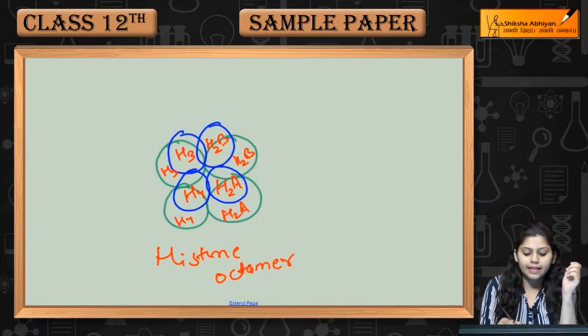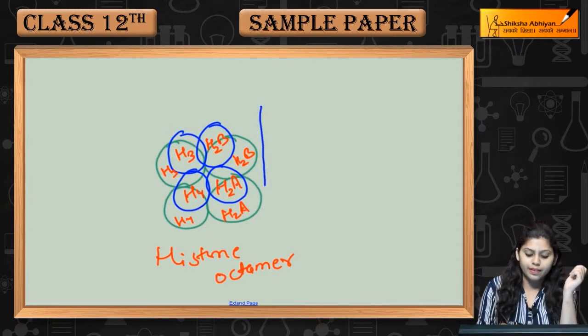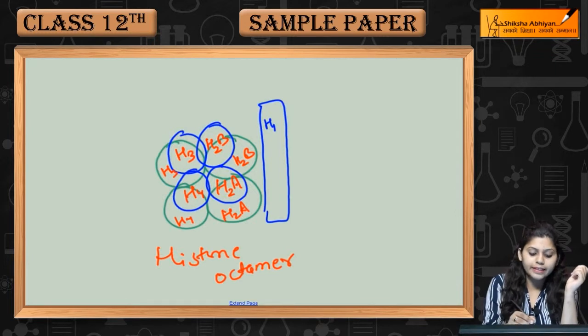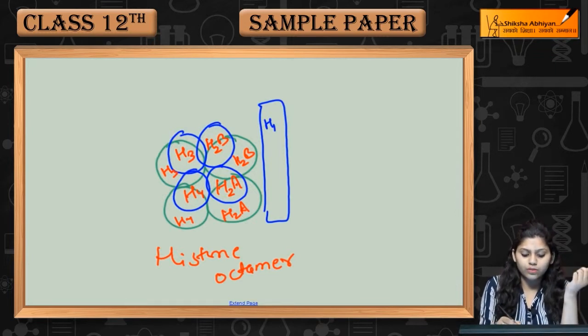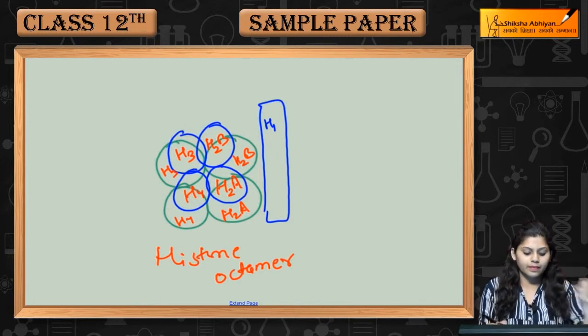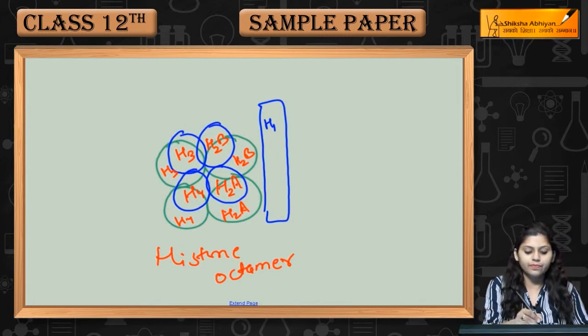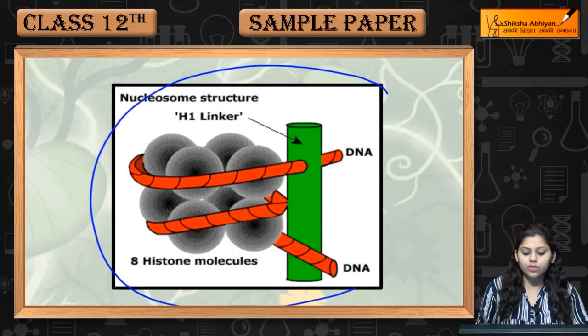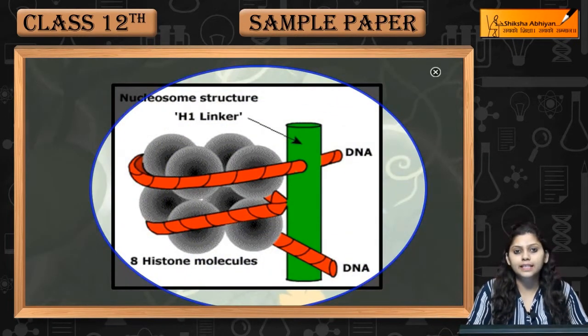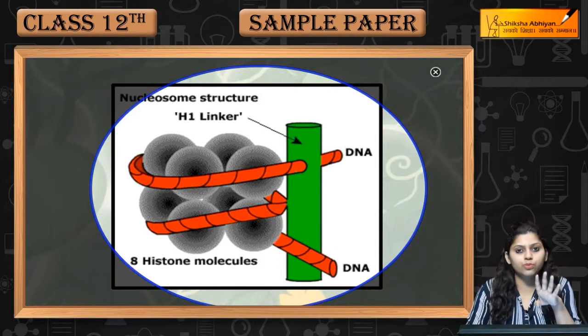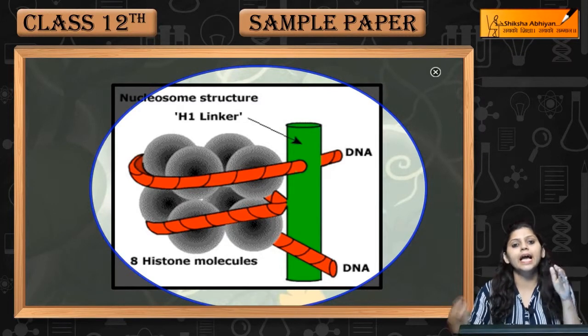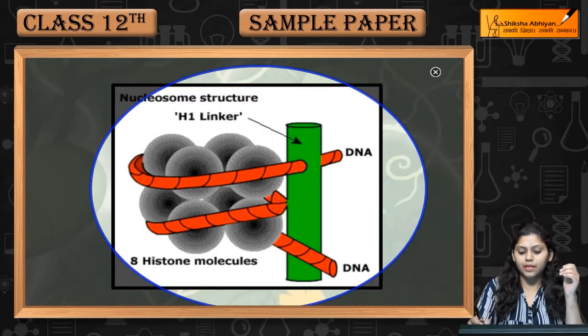This is H1 protein attached, H1 histone protein and DNA is wrapped around. Let me show you structure. Here is the structure, nucleosome structure, H1 linker, four histone proteins which is histone octamer and DNA is wrapped around it.